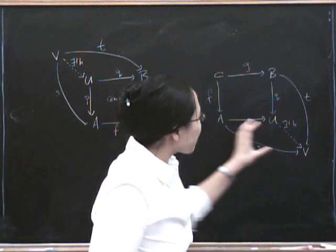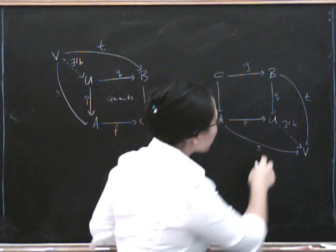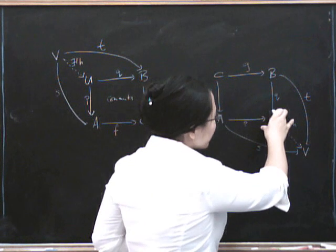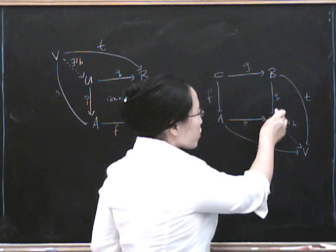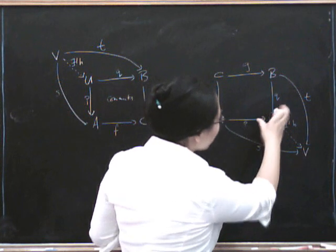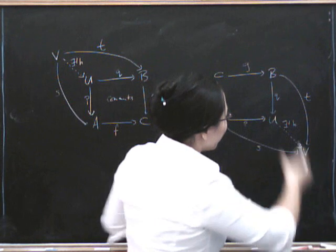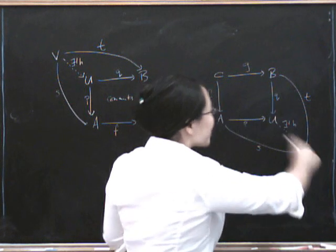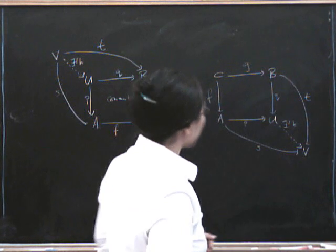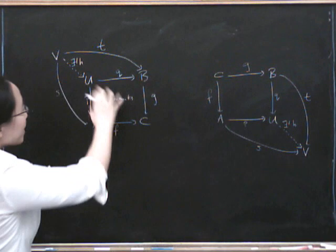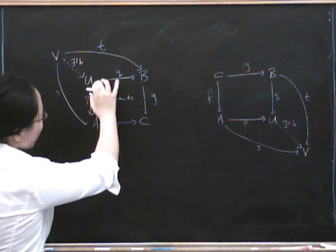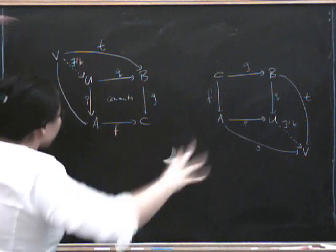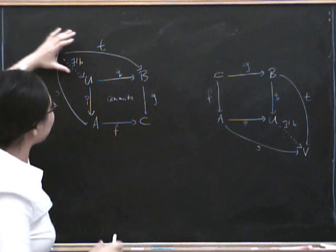So the way to remember which way around this factorization goes is you've got to think, okay, this is your universal one. And what you've got to say is that every other one factors through the universal one, which means that the universal one is kind of a factor of the other one. You're taking the universal one and you have to sort of stick a bit onto it, multiply it by something in order to get the non-universal one. And the same is true here. The universal one is the smaller one, as it were. And so to get the outside part, you've got to compose it by another morphism in order to get the outside part.